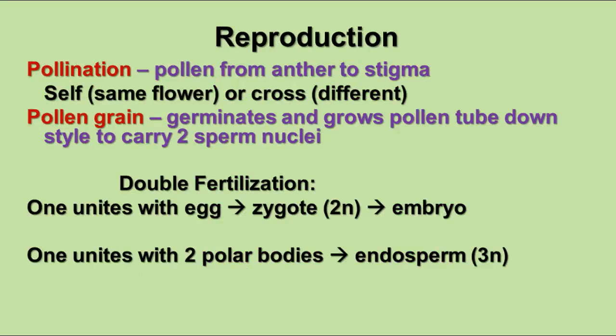In pollination, you're transferring pollen from the anther to the stigma. Self-pollination means it occurs within the same flower; cross-pollination means it occurs between different flowers. Some flowers are designed to self-pollinate most easily, but in others the stigma matures at a different time than the pollen grains to ensure cross-pollination and maintain genetic diversity. As a pollen grain lands on the stigma, it begins to germinate and grows a pollen tube down the style, carrying two sperm nuclei into the ovary.